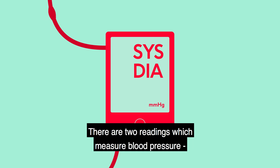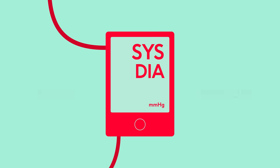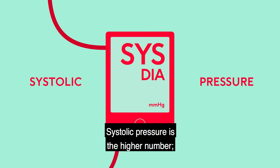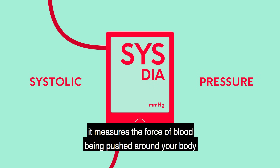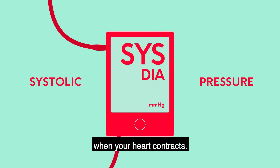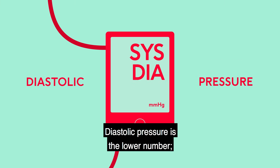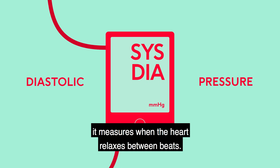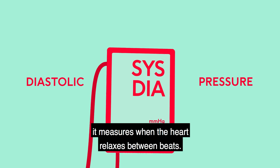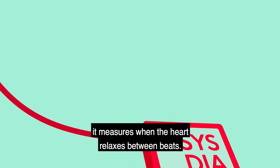There are two readings which measure blood pressure. Systolic pressure is the higher number — it measures the force of blood being pushed around your body when your heart contracts. Diastolic pressure is the lower number — it measures when the heart relaxes between beats.